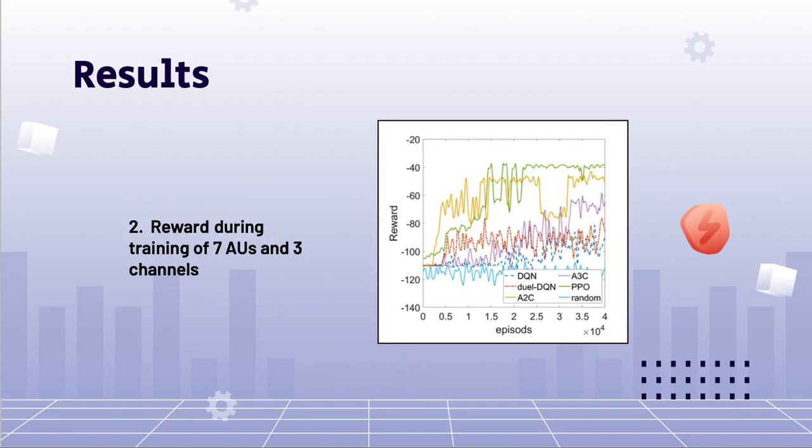This figure displays the reward acquired by each algorithm in each episode during the training process, specifically for the scenario with seven AUs. In comparison to A2C, PPO is less prone to getting stuck in a local minimum, indicating that the policy change constraint in PPO makes it more stable for the proposed scenarios.